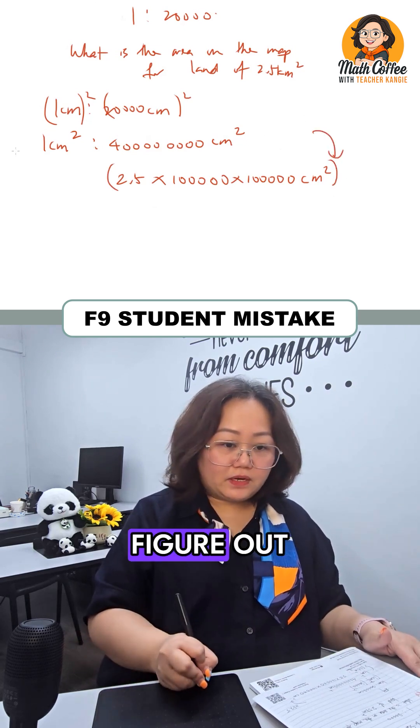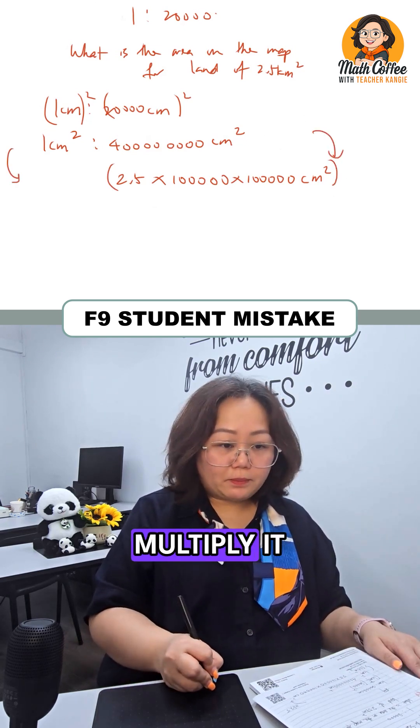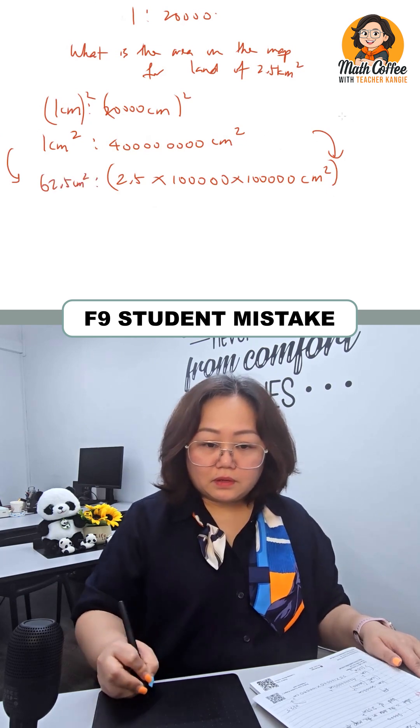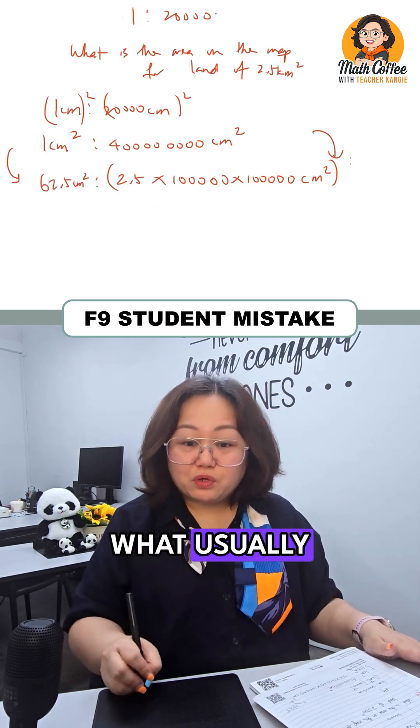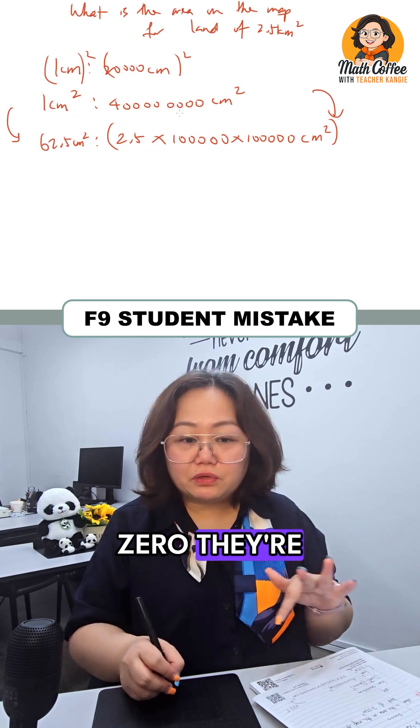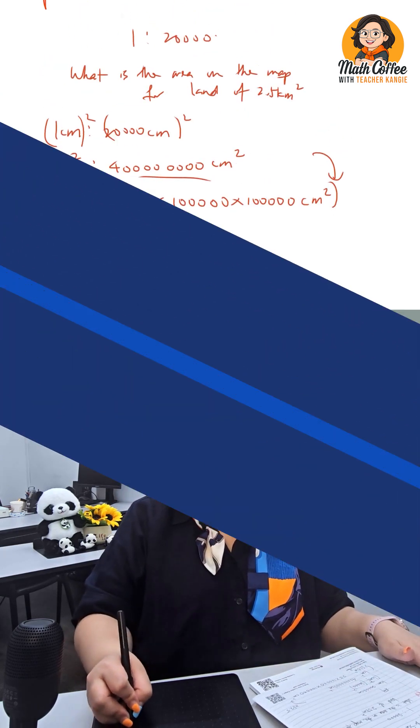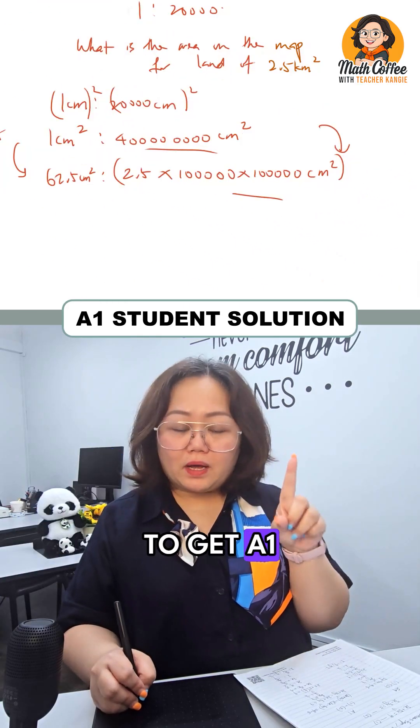Then after that they will figure out this side we have to multiply by 62.5. So this is what usually they will do. But the number of zeros they're going to write is like, wow, taking a lot of space as well as time.